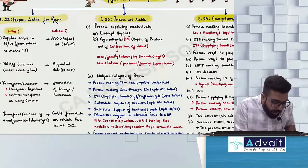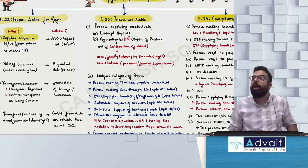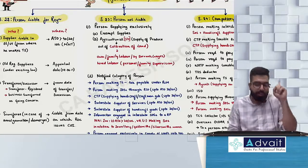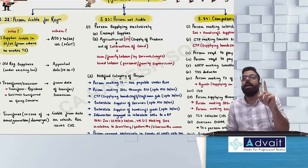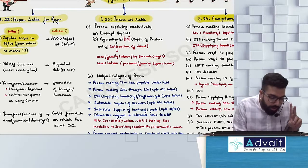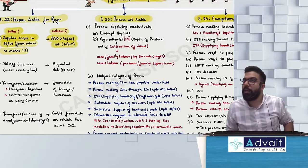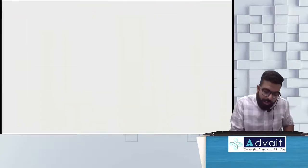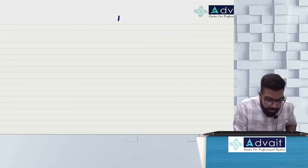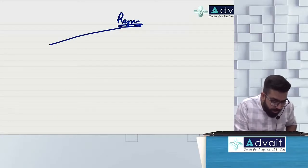So who is liable for registration? Section 22 says: a supplier is liable in the state or UT from where he makes taxable supply, when the aggregate turnover crosses 40, 20, or 10 lakh. Let me quickly tell you again the registration limits.